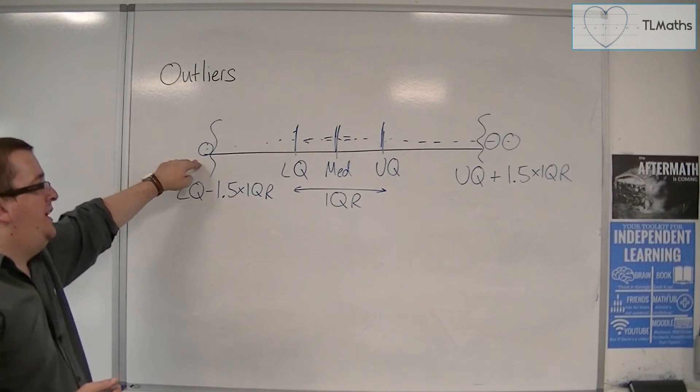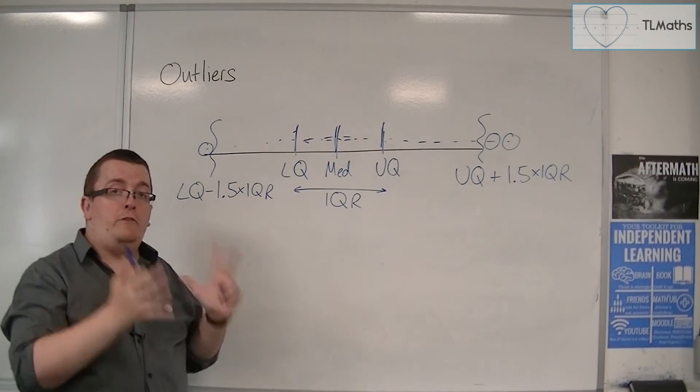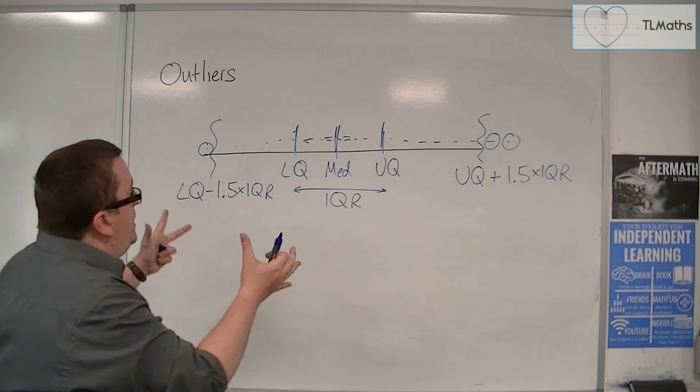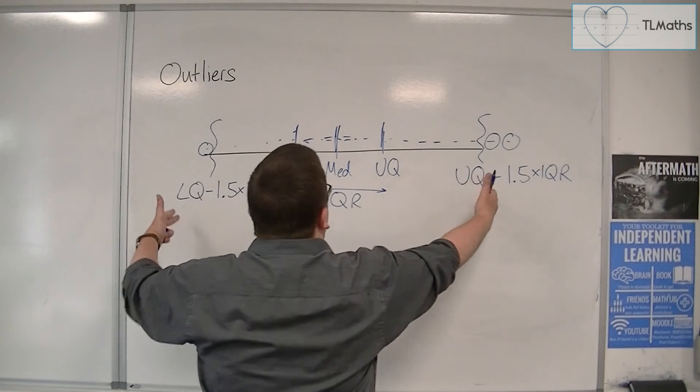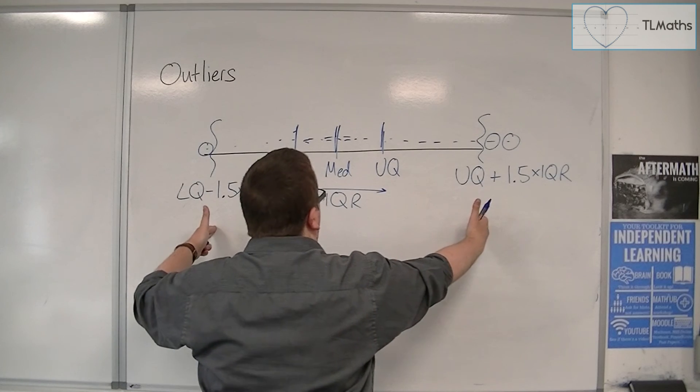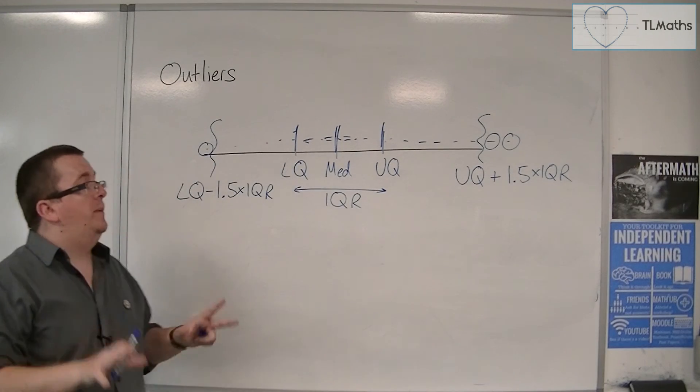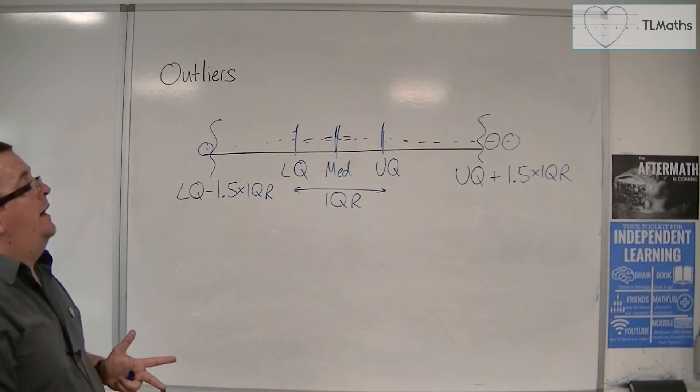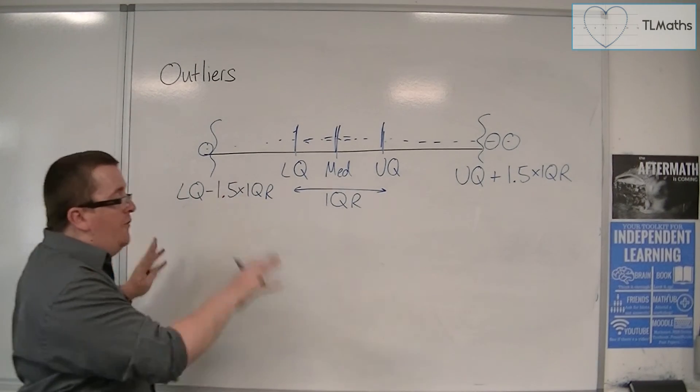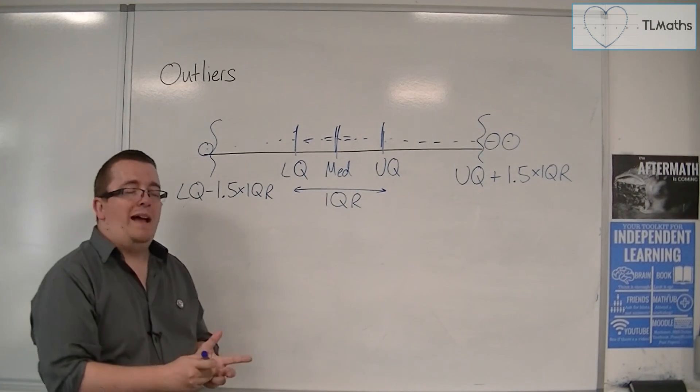So these give you effectively two boundaries. The majority of the data should be well between those two data points, but there may well be some other data outside of that. And therefore, if they are, we can count them as outliers.